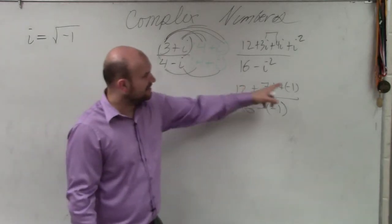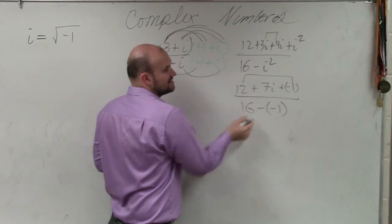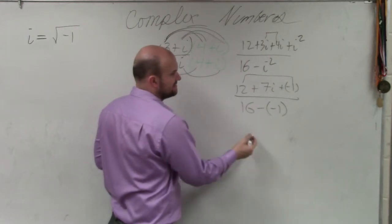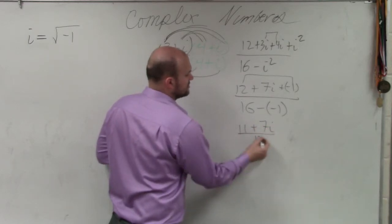Well, I can combine the 12 and the negative 1. And I can combine the 16 minus the negative 1, which would be positive 17. So therefore, I have 11 plus 7i over 17.